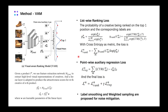In addition to the listwise ranking loss, we expect a pointwise regression term to enforce the model to produce more accurate predictions. We add the pointwise regression as a regularizer, and combine both the ranking loss and the pointwise loss to form the final loss. In order to provide more reliable labels, we propose two simple yet useful solutions named Label Smoothing and Weighted Sampling. Details can be found in our paper.